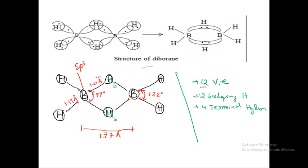Boron is sp3 hybridized, and because of that it overlaps with the hydrogen. Boron has only three valence electrons — one, two, three — and the other boron also has one, two, three. These orbitals overlap, and it behaves like a banana bond. In this bridging B-H-B bond you have only two electrons, which is why it behaves like a banana bond.